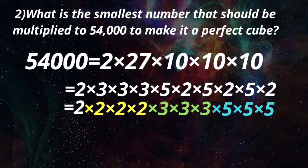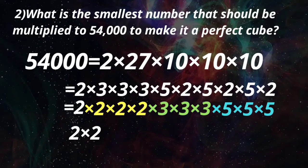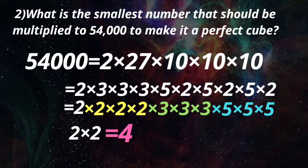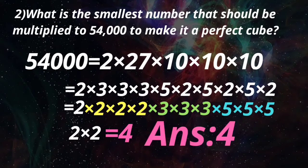However, one 2 is remaining without a group. If we multiply by one more 2, it forms a group of 3. Therefore, we are multiplying 2 x 2 equal to 4 with 54,000. So 4 is the smallest number that should be multiplied to 54,000 to make it a perfect cube.